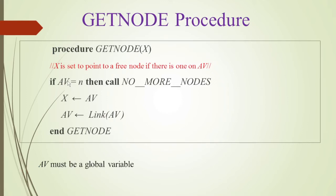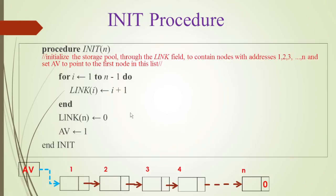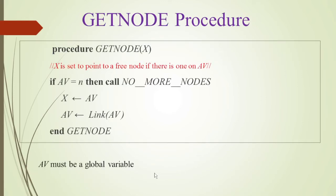In the get node procedure, if av is equal to n then we have no more nodes. Otherwise, av is stored to x, and then link of av is assigned to av so that av points to the next available node. After allocation, av will point to the second node, then the third node, and so on.